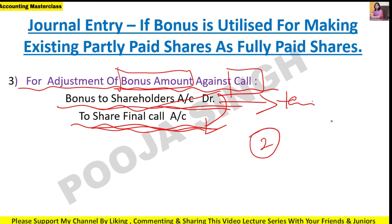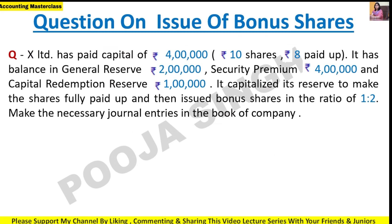So when the company uses the bonus amount to convert partially paid up shares to fully paid up, there are three entries. In total for the bonus share topic, there are five general journal entries: three for converting partially paid up to fully paid up, and two for issuing bonus shares.